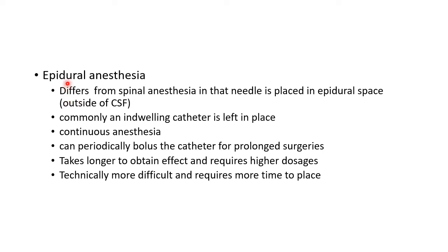Now let us see about the differences between epidural anesthesia and spinal anesthesia. In epidural anesthesia, the needle is placed in the epidural space, whereas in spinal anesthesia, we place the needle in the subarachnoid space and inject the anesthetic into the CSF. In epidural anesthesia, we inject the anesthetic outside of the CSF.